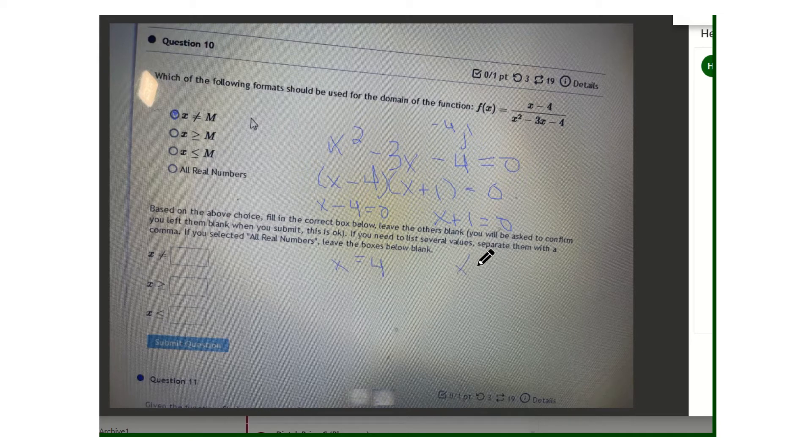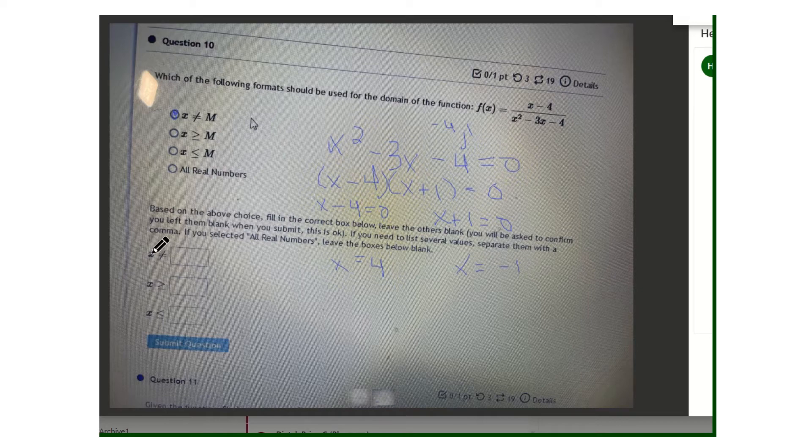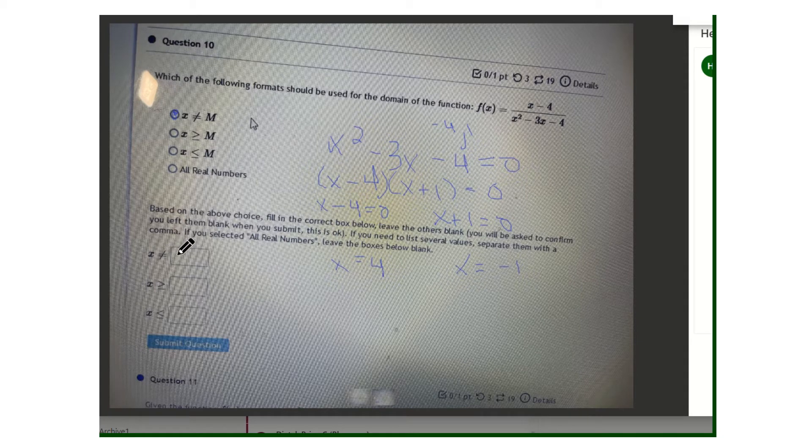Now let's remember even though we were solving, we're actually going to exclude these two answers. So this is going to go in the blank x is not equal to and we'll have 4 comma negative 1 right there.